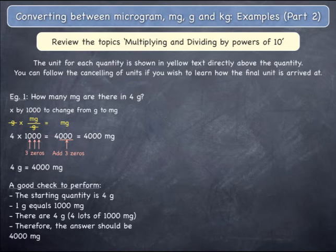A good final check to perform is to look at your starting quantity of 4 grams. 1 gram equals 1,000 milligrams. 4 grams is going to be 4 lots of 1,000 milligrams, and so you expect an answer of exactly 4,000 milligrams.